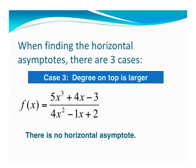And our last one is when we have a degree in the numerator that is larger than the degree in the denominator. I have x cubed in the numerator and x squared in the denominator for my highest degrees. While the degree in the numerator is larger, therefore there's going to be no horizontal asymptote.